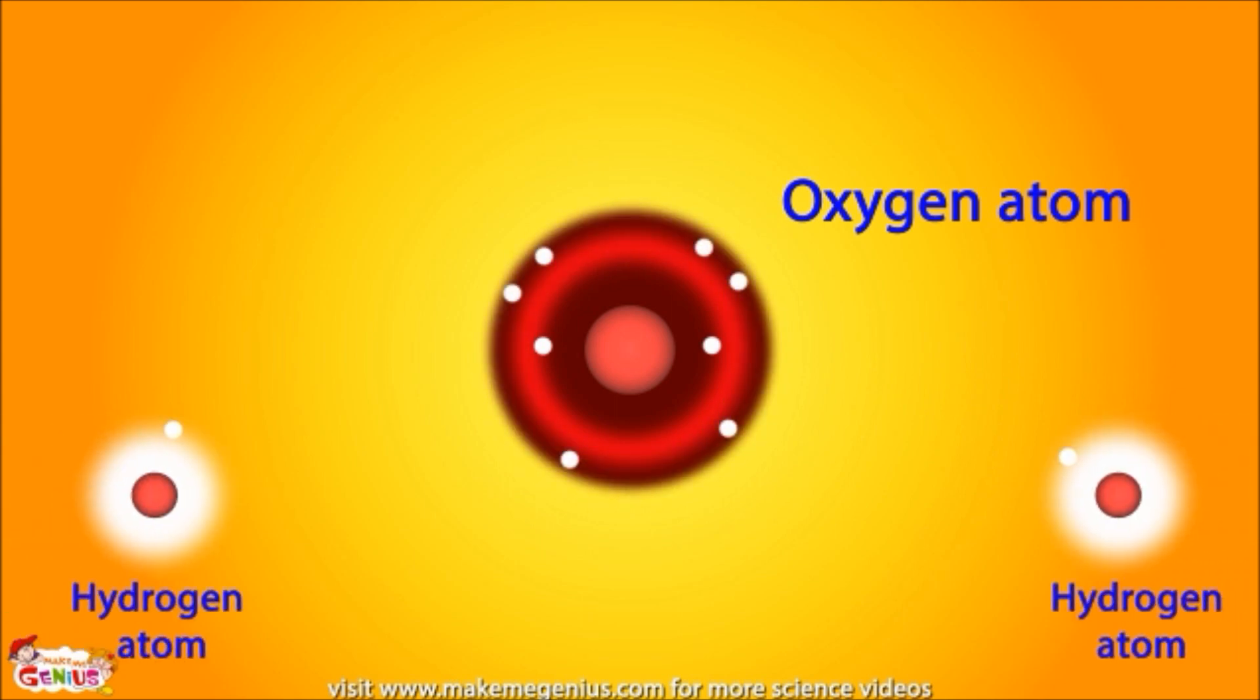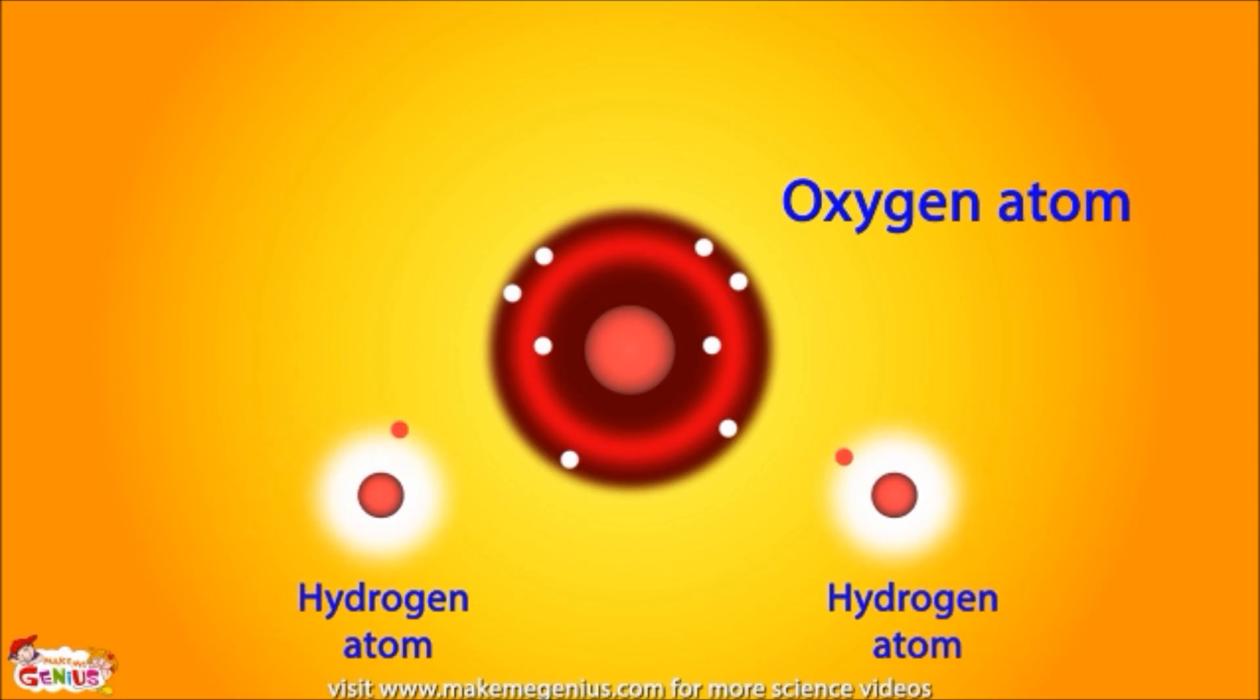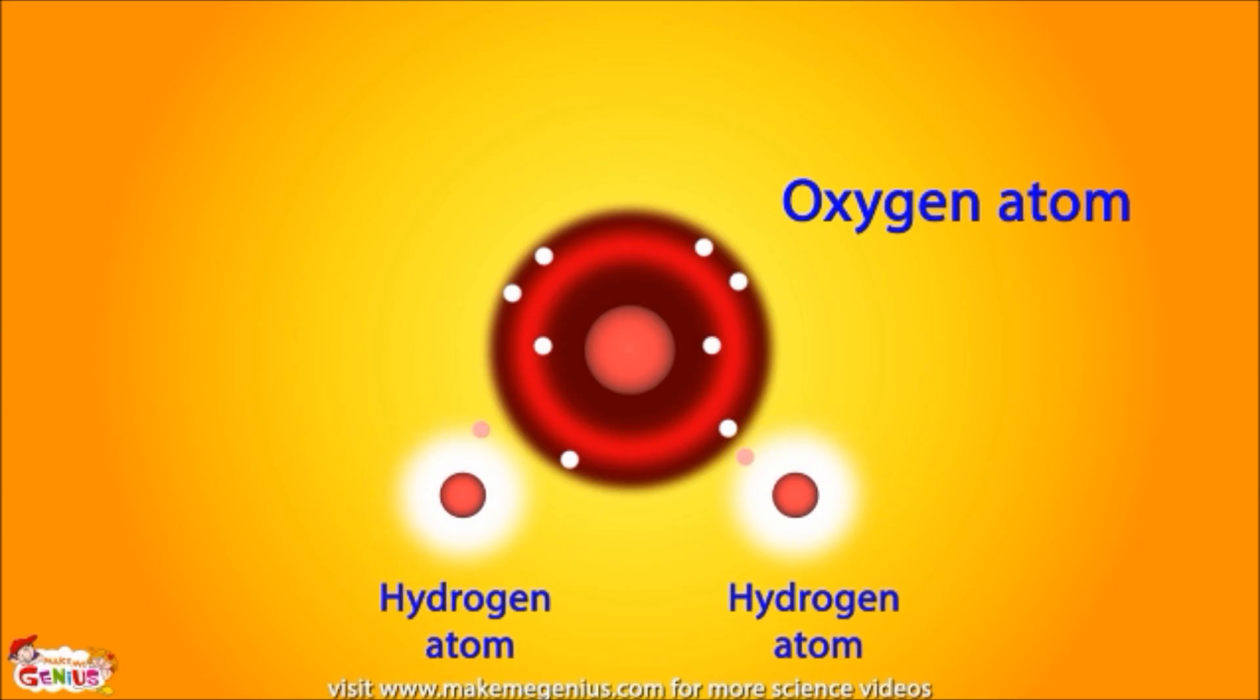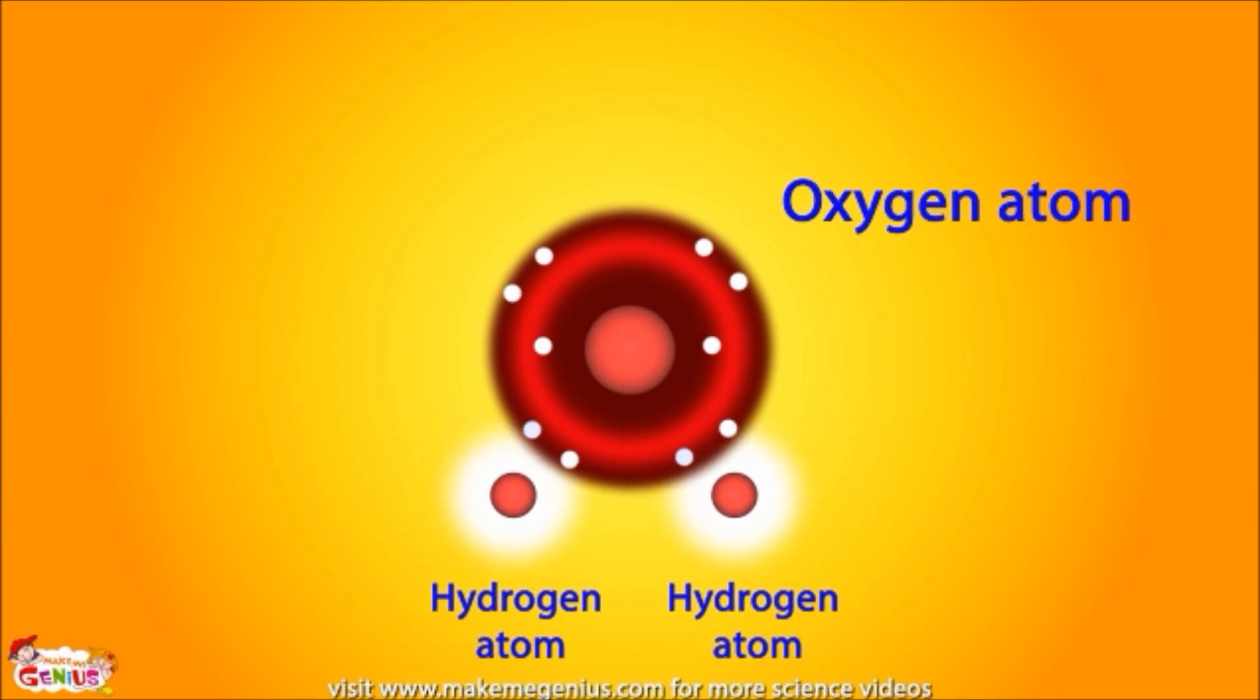Now here is a hydrogen atom. It only has 1 electron in its outer shell, but it can hold 2 electrons in its shell. So it is also looking for more electrons. So the oxygen atom bonds with 2 hydrogen atoms to fill its valence shell by sharing 1 electron from each hydrogen atom.